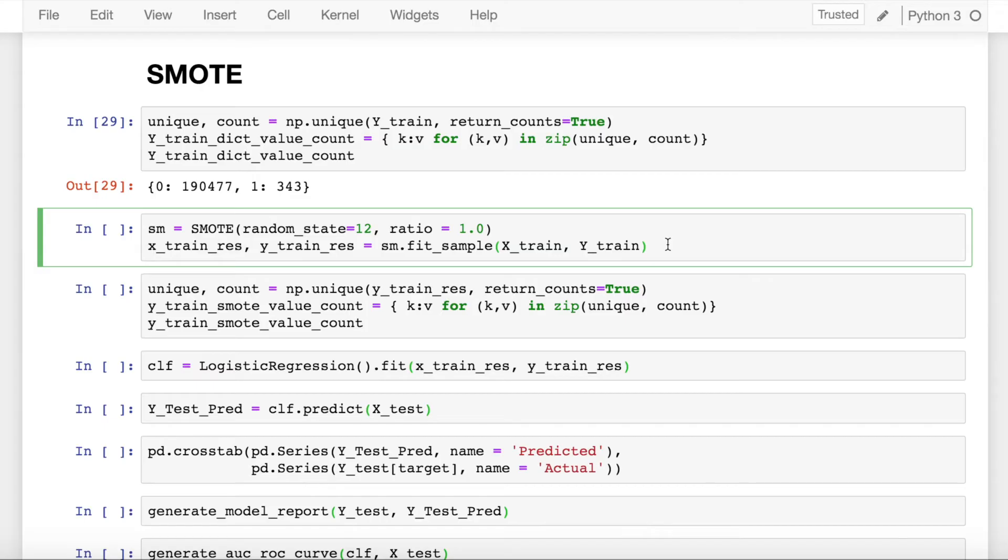So in our example, I have close to 190,000 samples for class 0. After using SMOTE, I'll have 190,000 samples in class 1 as well.